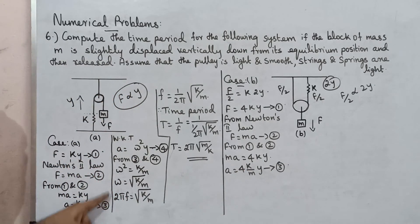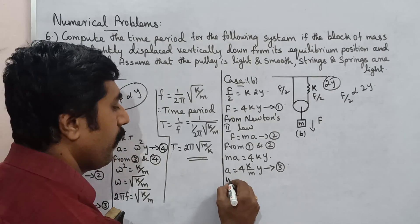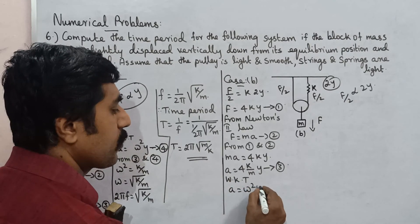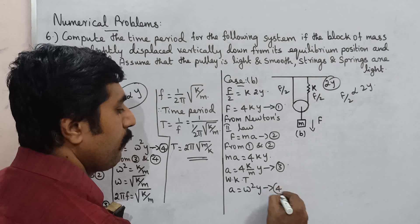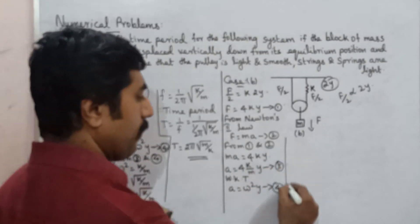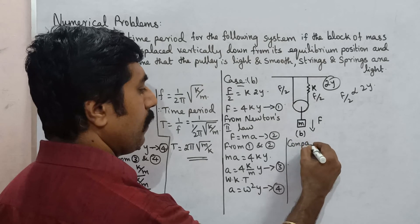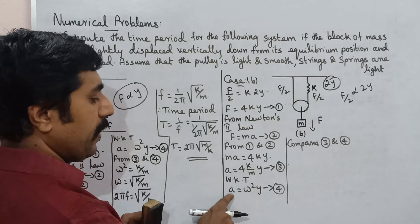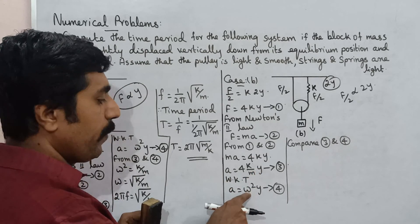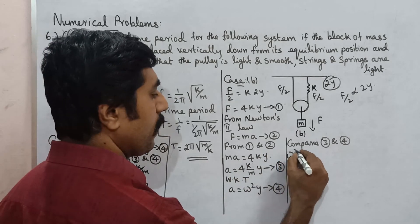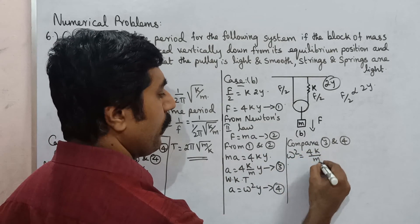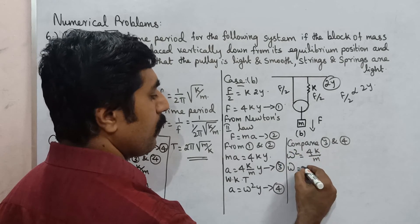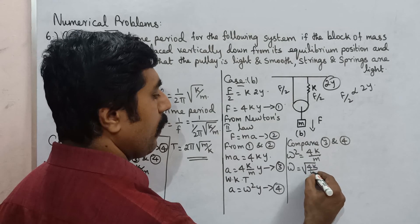We know the formula for acceleration in SHM is a equals omega squared times y. Here we have a factor of 4, so comparing equations 3 and 4, omega squared equals 4k/m. Taking the square root, omega equals the square root of 4k/m.